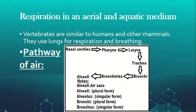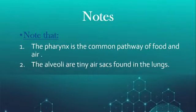Respiration in an aerial and aquatic medium. Vertebrates are similar to humans and other mammals — they use lungs for respiration and breathing. Here is a sketch of the pathway of air. You can see it moving from the nasal cavities to the pharynx, then larynx, moving to the trachea, dividing into the bronchi and bronchioles, and then finally to the alveoli. Alveoli is the plural form and its singular form is alveolus. Bronchi is the plural form and its singular form is bronchus. Note that the pharynx is the common pathway of food and air, and the alveoli are tiny air sacs found in the lungs.